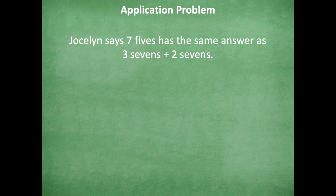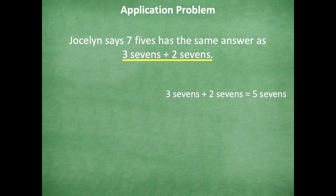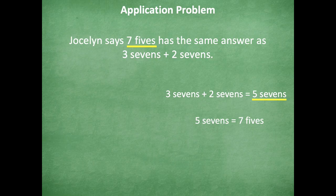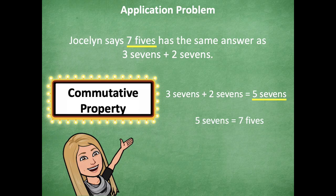All right, friends, make sure to pause if you need more time. Otherwise, here we go. I can look here and say that three sevens plus two sevens equals five sevens. The problem is talking about seven fives, and I'm comparing it to five sevens. So I'm really trying to see if five sevens equals seven fives. And because of the commutative property, I know that they do. So Jocelyn is correct because you're just flip-flopping those factors.